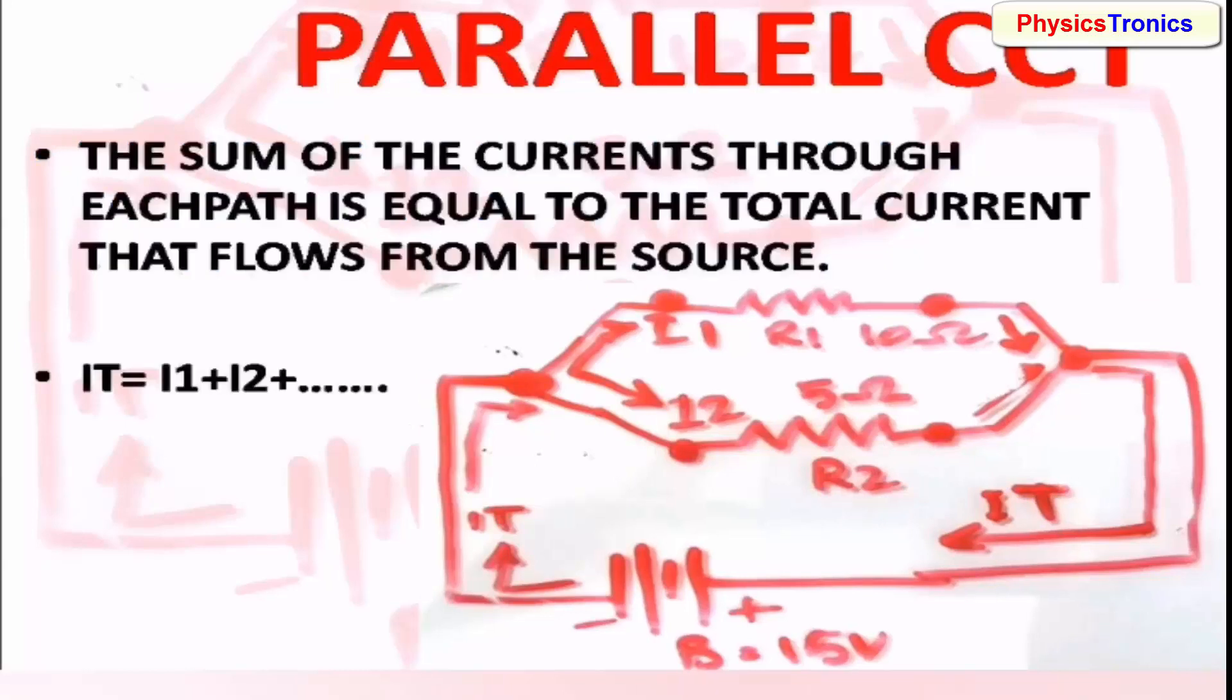Next rule for parallel circuit is that the sum of the currents flowing from each branch will be equal to the current drawn from the battery or from the source. The current passing through every branch line, every component in parallel, the sum of every branch current will be equal to the source current.